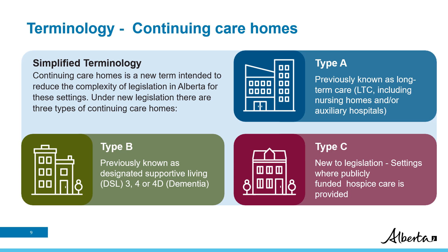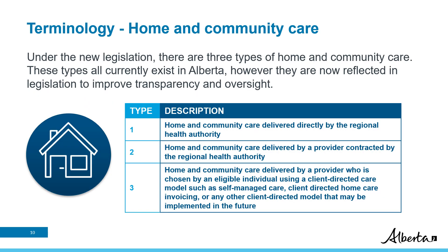Type C brings publicly funded hospice settings into the new legislative framework. Type C continuing care homes house individuals approaching the end of life with a life-limiting condition. Admission typically occurs in the last three months of life based on assessed unmet needs. The new continuing care legislation also reflects the existing types of home and community care in Alberta. Type 1 is where the regional health authority is the provider. Type 2 is where a home and community care provider is contracted. Type 3 refers to the current client-direct care models that exist in Alberta.